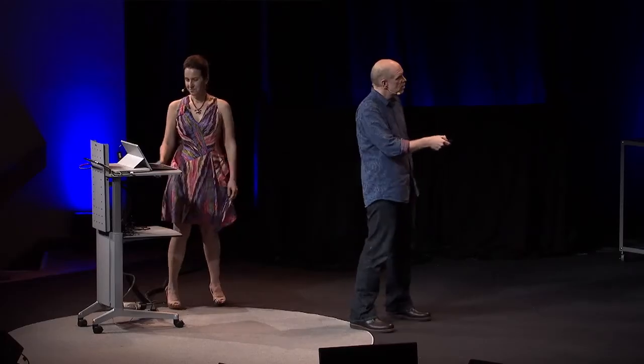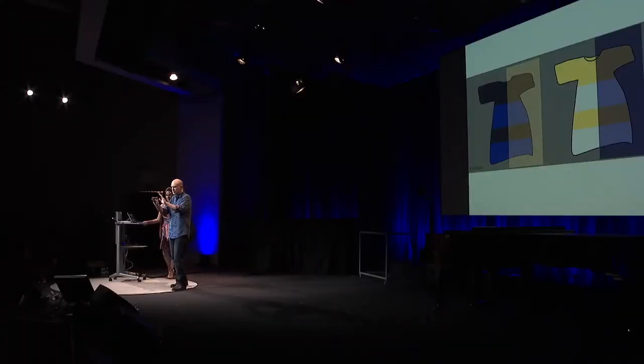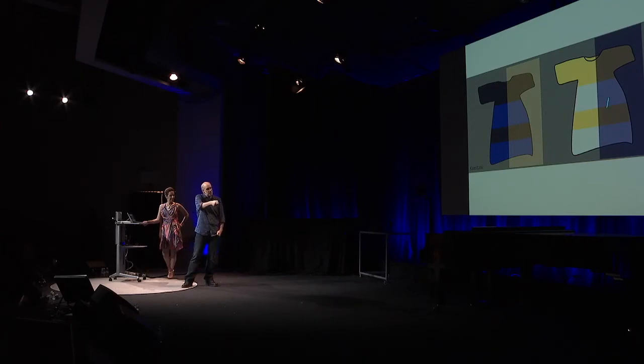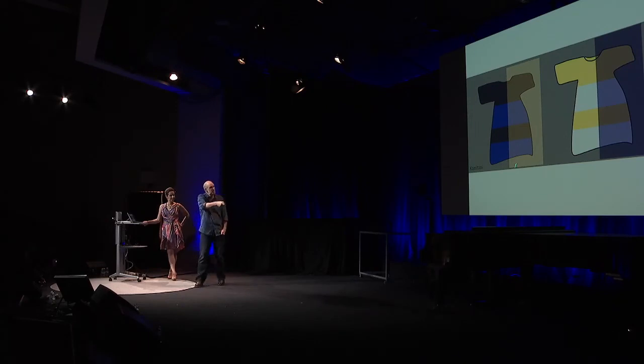For example, if we now take the dress and we show this part of the dress compared to this part of the dress, these two parts of the dress right here in the shade here and in the sun are actually physically identical coming onto your retina. They're physically identical. But this one looks like it's part of a yellow and white dress because it appears to be in the shade. Whereas this one looks like it's part of a blue and black dress because it appears like it's in the sunlight.